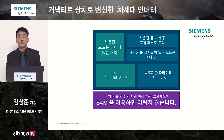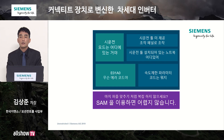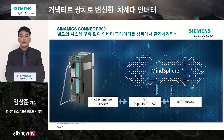또한 인버터 설치 환경이 열악한 환경에서도 있을 수 있죠. 단독으로 쓰는 인버터의 경우 파라미터를 변경하든지 발생된 에러를 해제하기 위해서 그 환경에 꼭 가야 될까요? 이 와이파이 모듈은 반경 50m까지 통신이 가능한 모듈입니다. 다음 소개해드릴 내용은 인버터의 파라미터를 클라우드 기반으로 관리하는 방법에 대한 내용입니다.